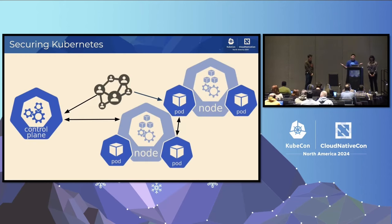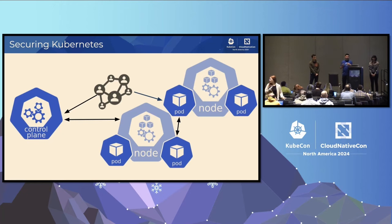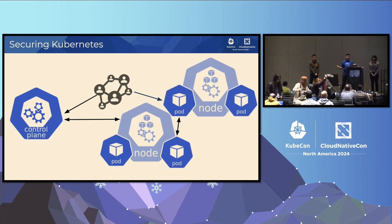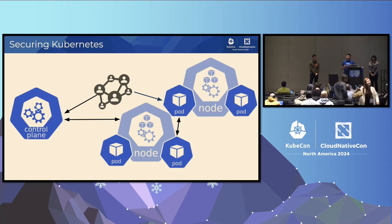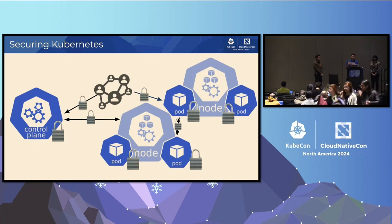If you don't know, upstream Kubernetes by default is not secure. Guardrails are not in place when you install upstream Kubernetes. Pods can really talk to other pods, even on other nodes. You could easily traverse across namespaces as well. If a user has somehow breached a pod or container, they can also be able to access the Kube API server and the worker node itself. We're here to talk about how to secure Kubernetes.